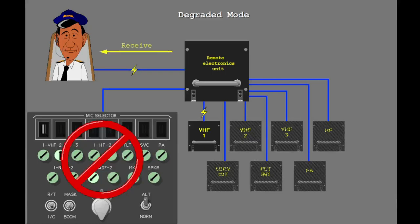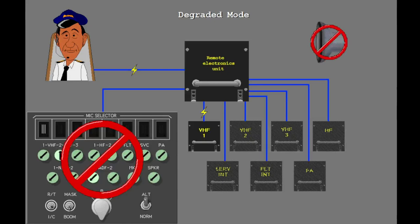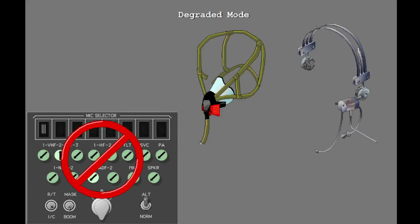The captain hears only VHF1 audio in the headset at a preset volume. There is no volume control in degraded mode. The speaker does not work, and all other receiver functions are inoperative. The mask boom switch continues to operate normally in the degraded mode.